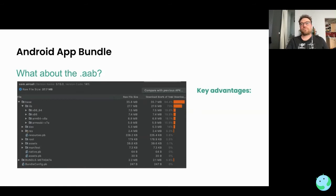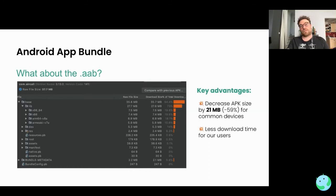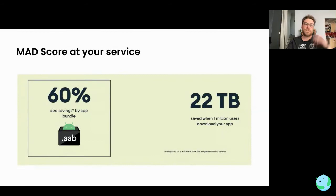Your users will be happy with a tinier APK. A key advantage: when we made the change from building an APK to building an AAB, we saw 21 megabytes dropped from our application — we optimized our APK by almost 60 percent. That's huge. This means less download time for our users when they download a new update or install the app fresh.